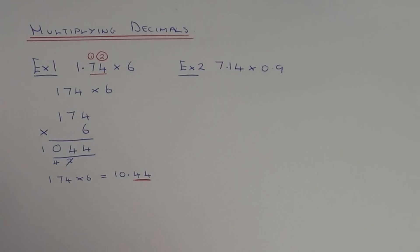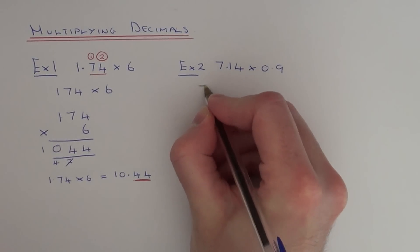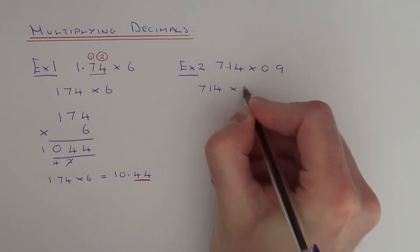So let's do the same method on example 2. This time we've got to work out 7.14 times 0.9. We've got two decimal numbers here, but it's exactly the same method. So ignore the decimals and let's work out 714 times 9.